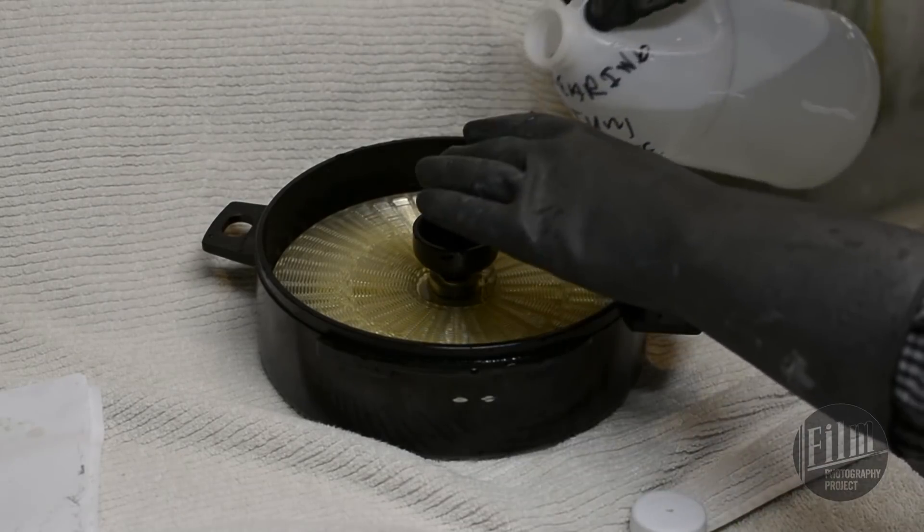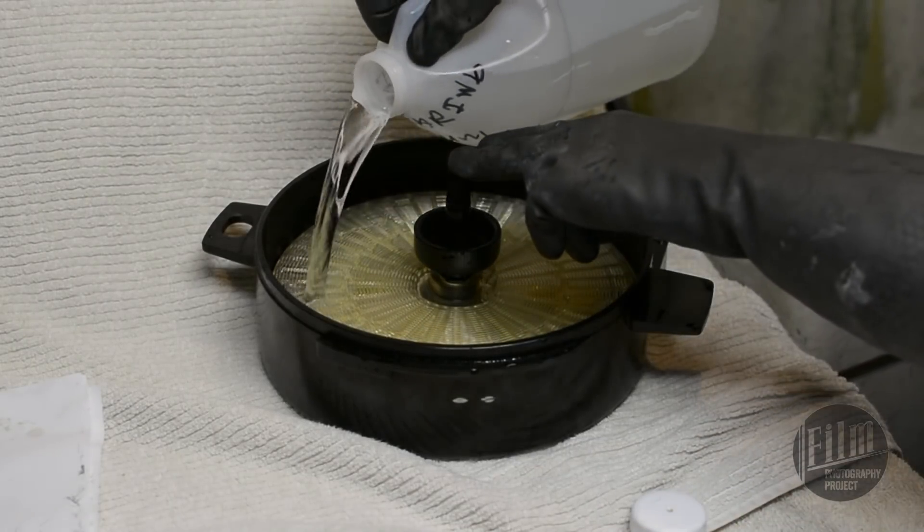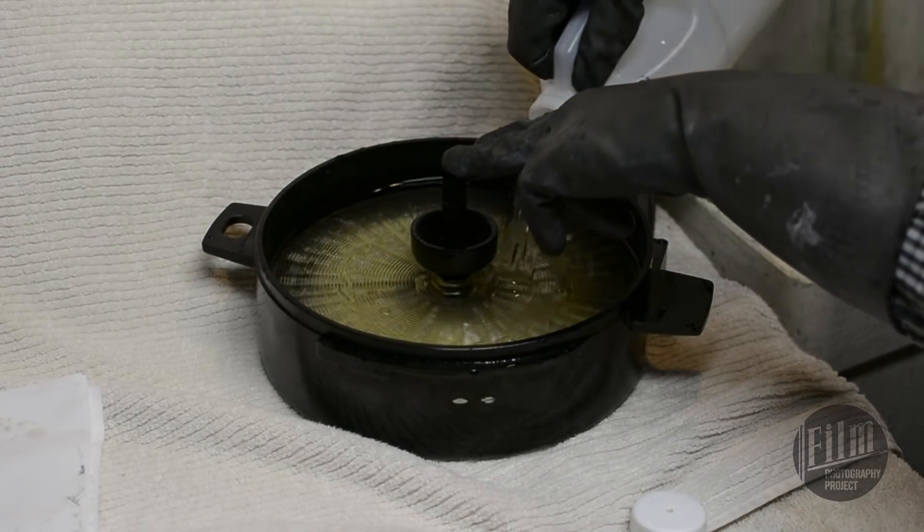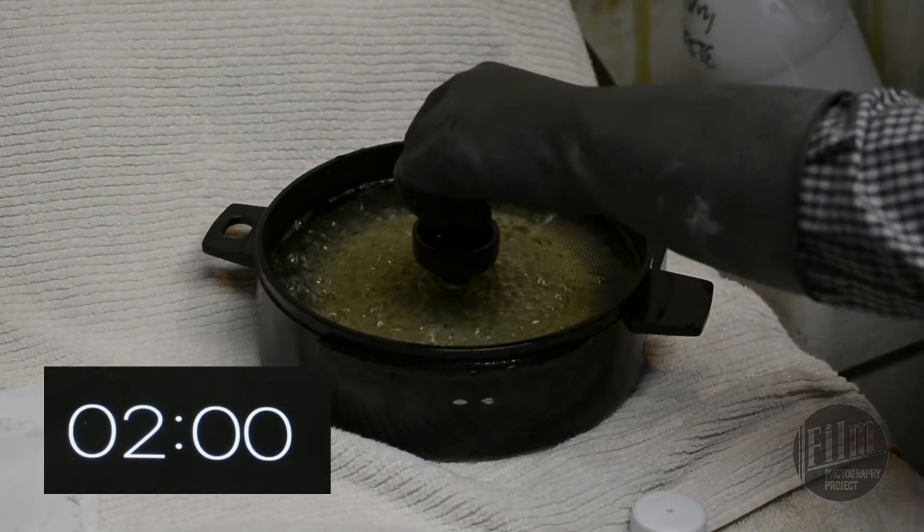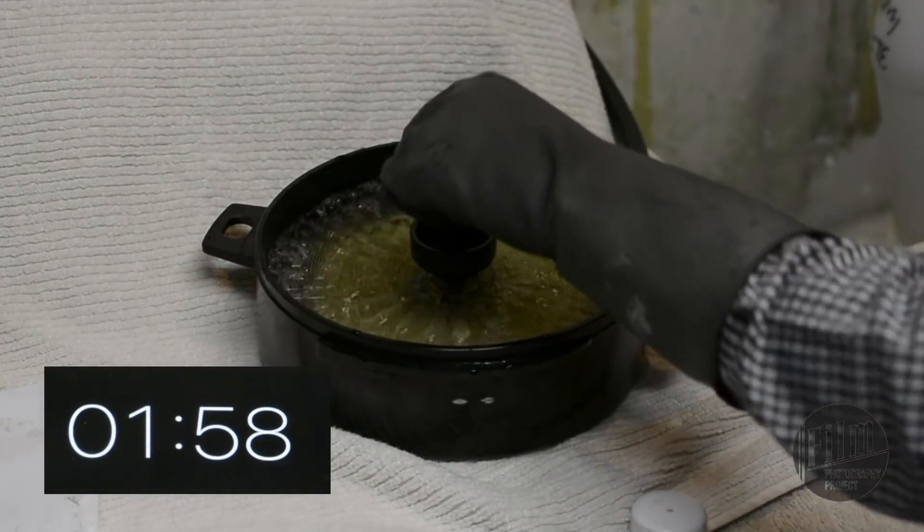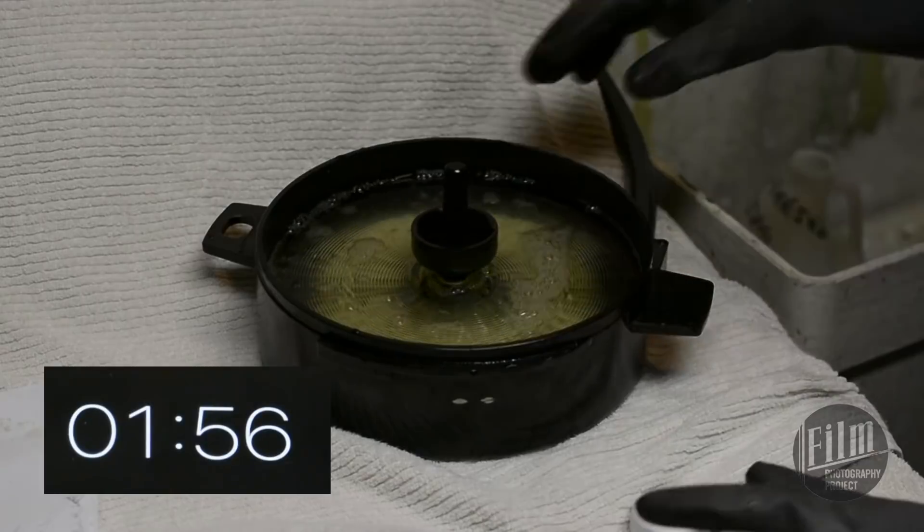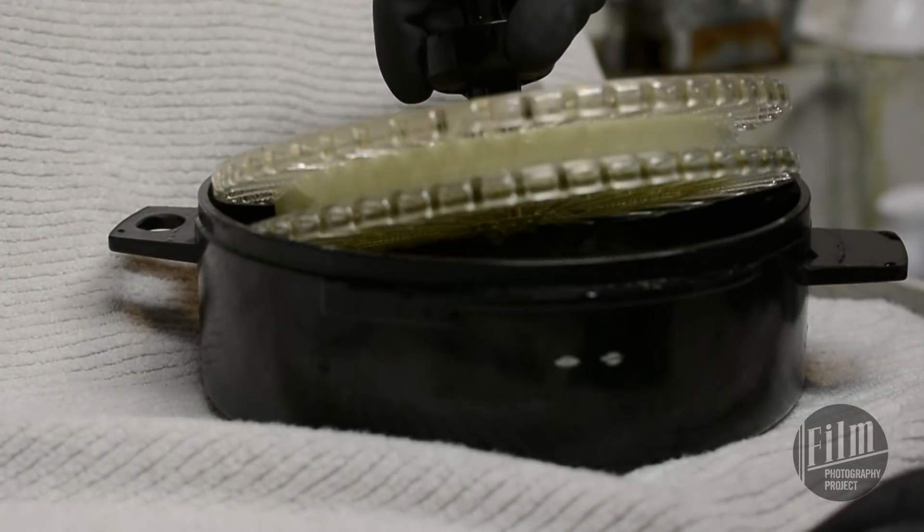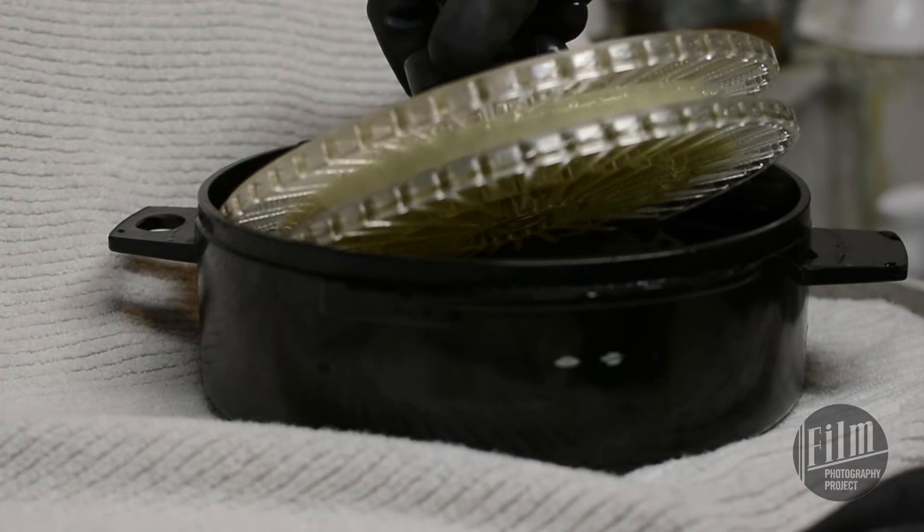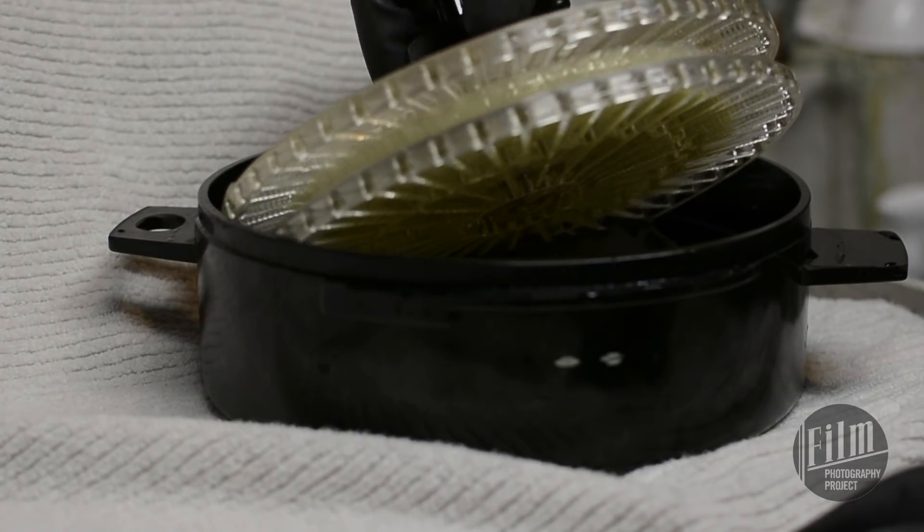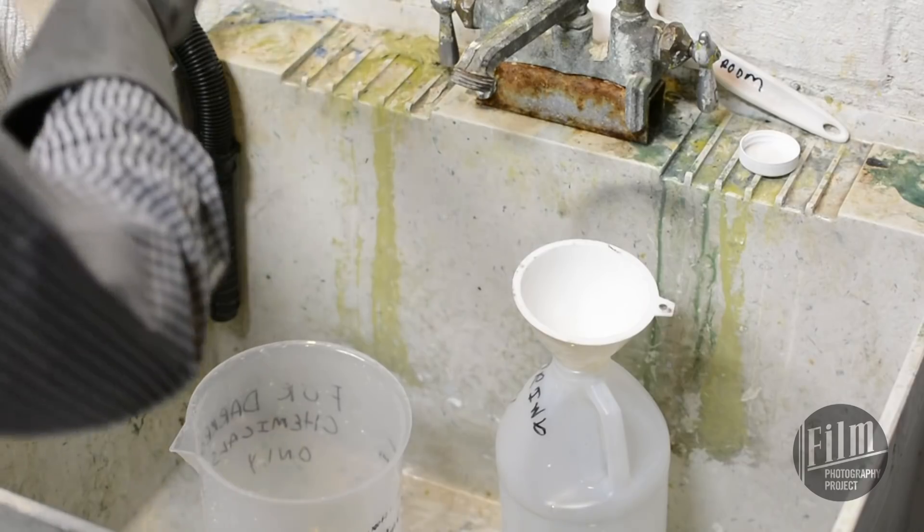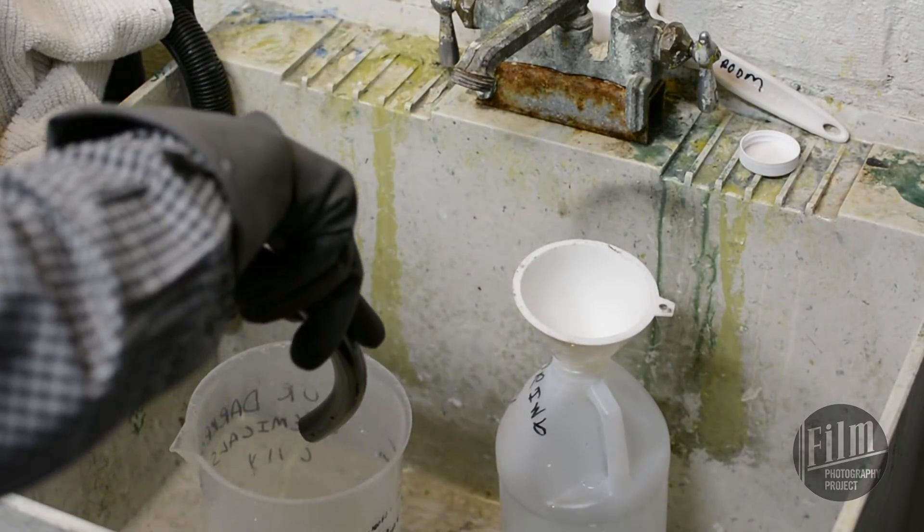Next we need to clear. At this point the film is no longer light sensitive, so we can do this with the lid off. Cover the film with your clearing bath and set a timer for 2 minutes. Agitate the spindle every so often. After about a minute, check the film. You should see a clear base and slightly less yellowish images.